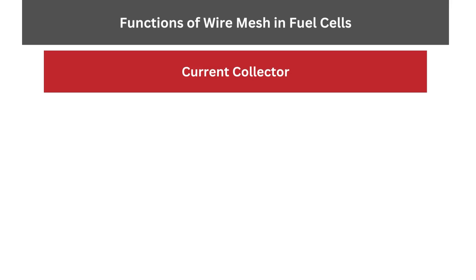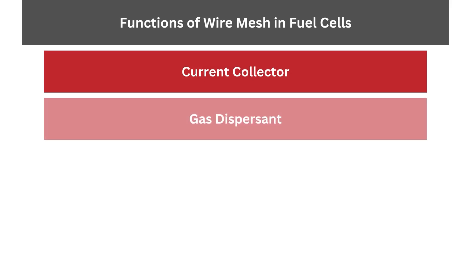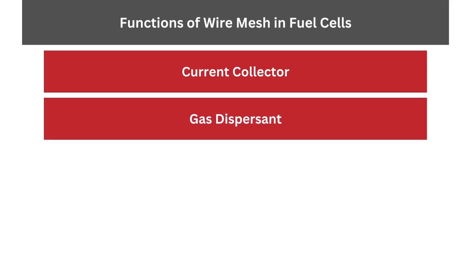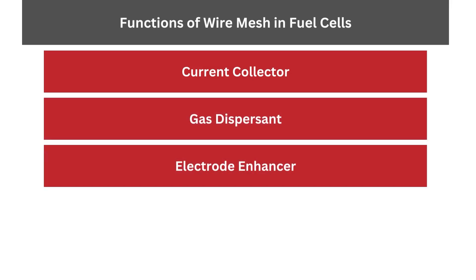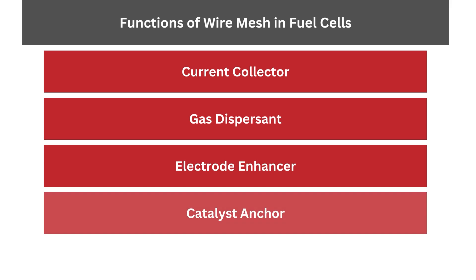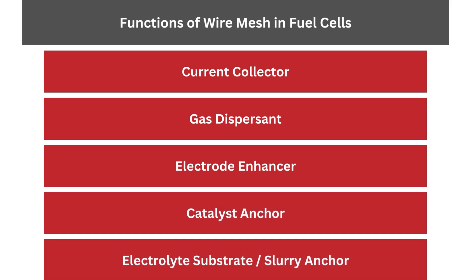Within these sub-components, woven wire mesh and other types of media are used in the electrochemical stack to perform one or more of the following functions: current collector, gas dispersant, electrode enhancer, catalyst anchor, and electrolyte substrate or slurry anchor.